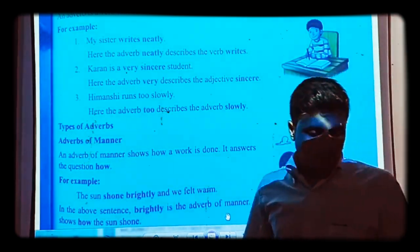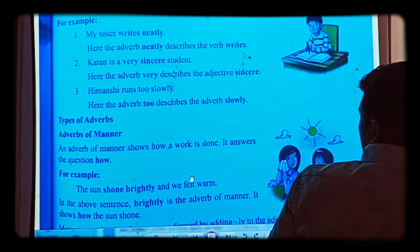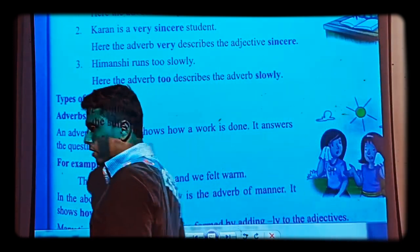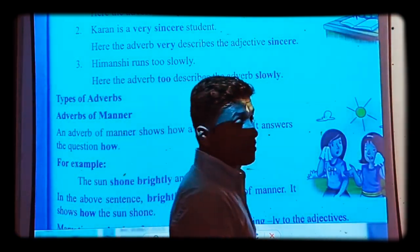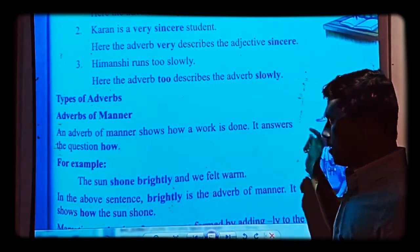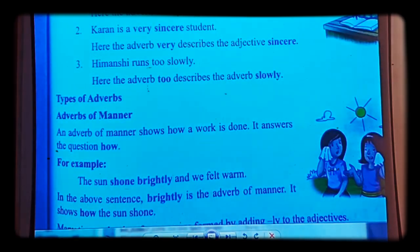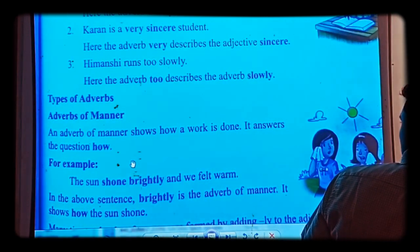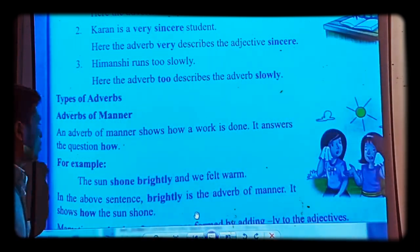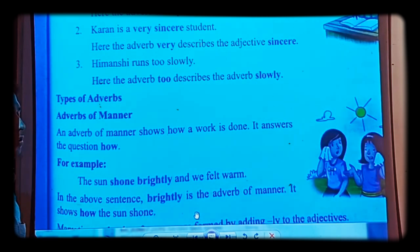Now we have a few kinds of adverbs to discuss. The first type is the Adverb of Manner. This type gives us the answers to the question 'how' — in what manner, in what way the things have been done. An adverb of manner shows how a work is done and answers the question 'how'. For example: the sun shone brightly and we felt warm. How was it shining? It was shining brightly. That is an adverb of manner — it shows how the sun shone.